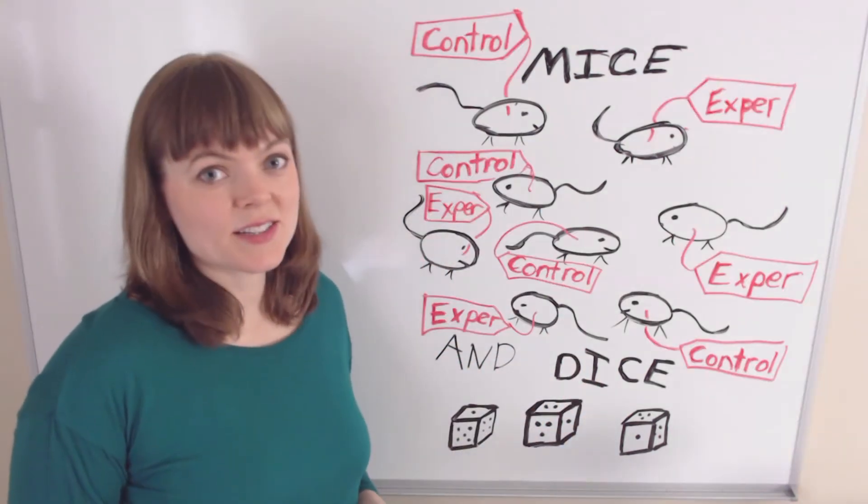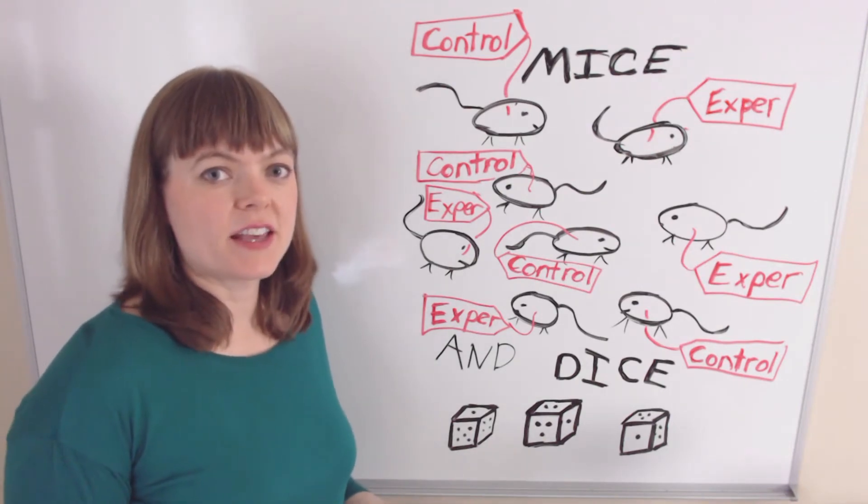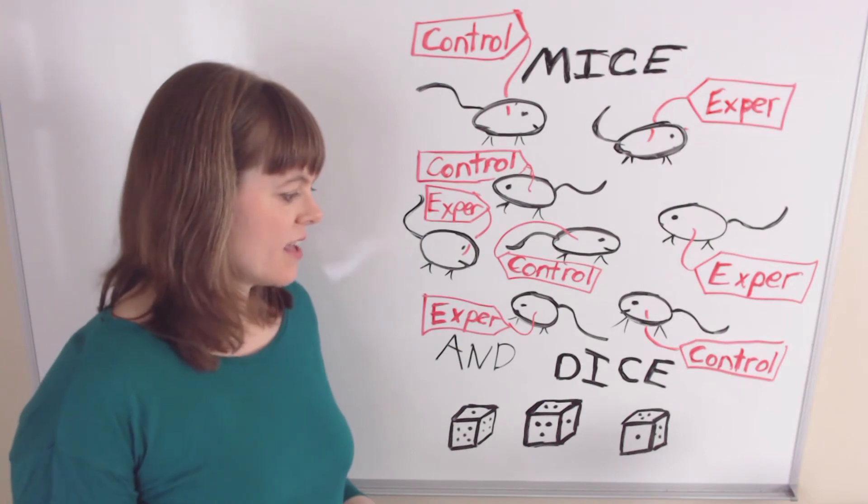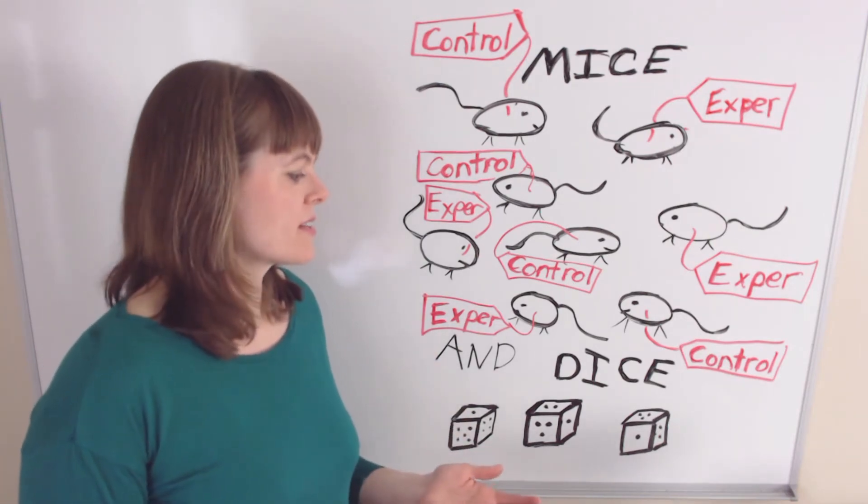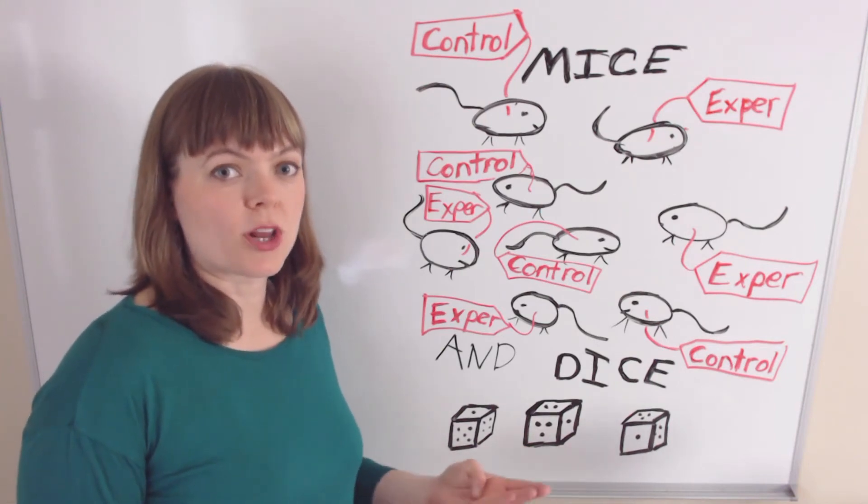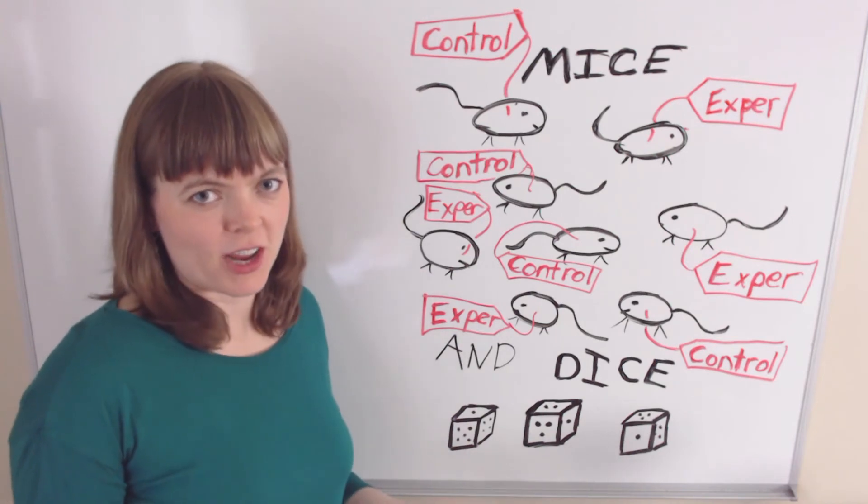Now, economists can't do this because it's unethical for us. But what we're going to do instead is use econometric techniques paired with some kind of random element that's analogous to the dice, to the random sorting mechanism. And we call this our source of exogenous variation.